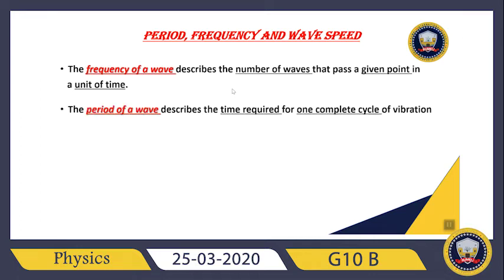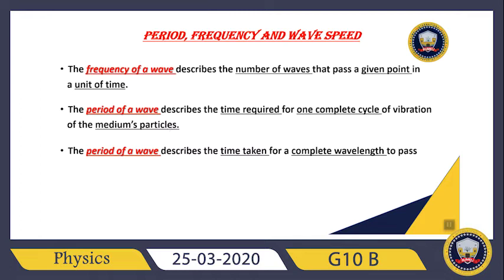The period of the wave describes the time required for one complete cycle of vibration of the medium particles. As we have said before in simple harmonic motion, the period means the time needed to make one complete rotation or one complete cycle. It describes the time required for one complete cycle of vibration of the medium particles, meaning the time taken for a complete wavelength to pass a given point.